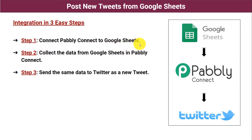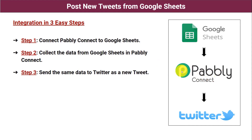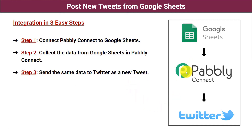Step one: connect Pabbly Connect to Google Sheets. Step two: collect the data from Google Sheets into Pabbly Connect. Step three: send the same data to Twitter as a new tweet. Pabbly Connect is going to capture the data from Google Sheets and send the same data to the Twitter account as a new tweet. Let's learn the integration process now.